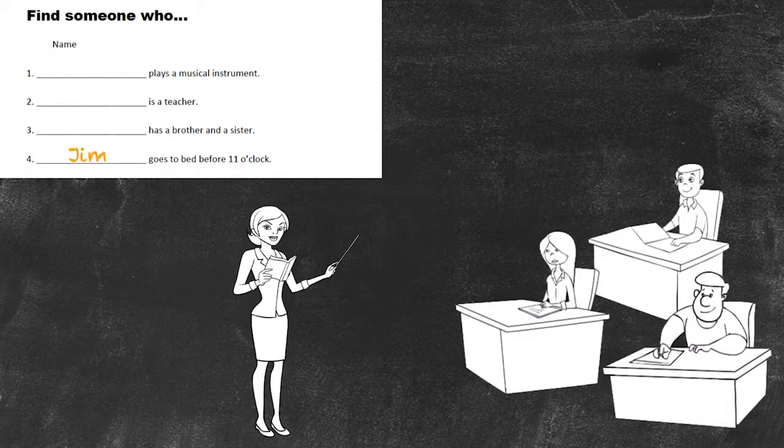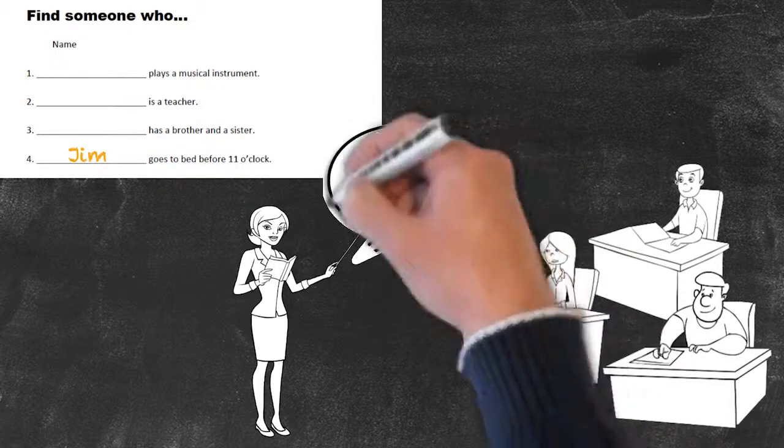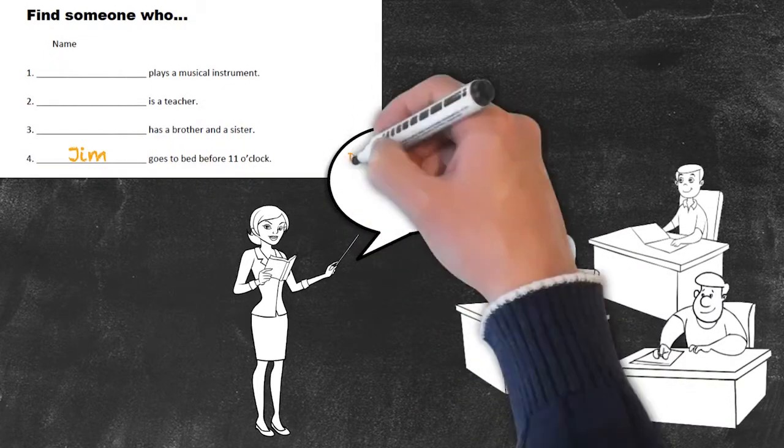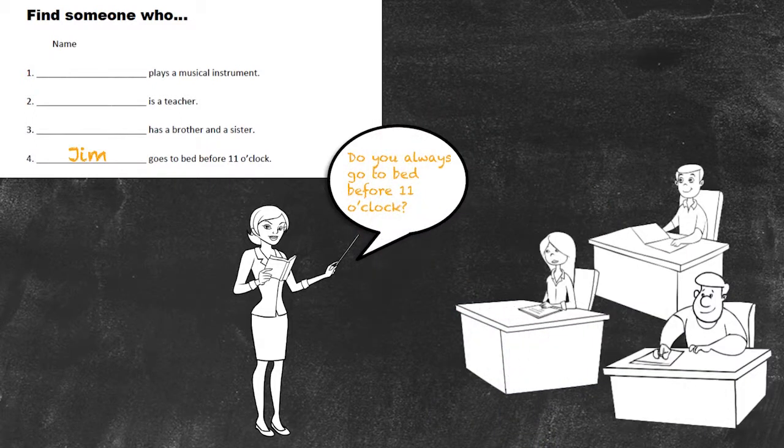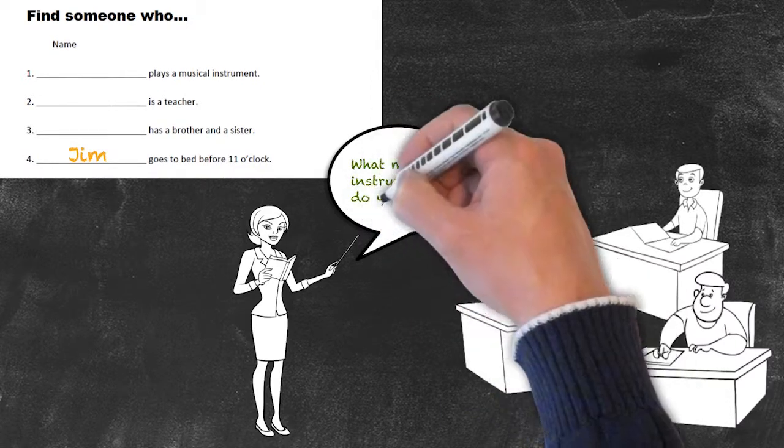During the feedback, the teacher can also expand upon these general truths. When the teacher hears that Jim goes to bed before 11 o'clock, the teacher can ask: Why do you go to bed before 11 o'clock? Do you always go to bed before 11 o'clock? The same can be done for musical instruments. What musical instrument do you play?